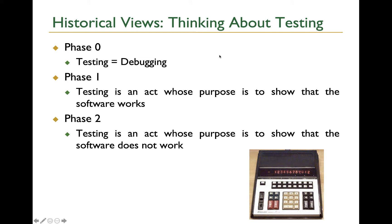If you look at the history of software testing, it went through different stages. In the very beginning, there wasn't any testing — people were struggling just to make things work, and testing just meant debugging. Later on, people realized we need to perform formal testing and verification, with the goal of proving that the software works without any issues. But then people realized it's impossible to show software works perfectly or has no bugs. So the main purpose of testing shifted to showing errors rather than showing the absence of errors.